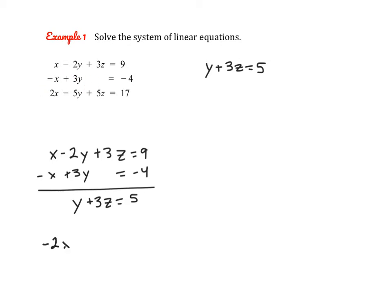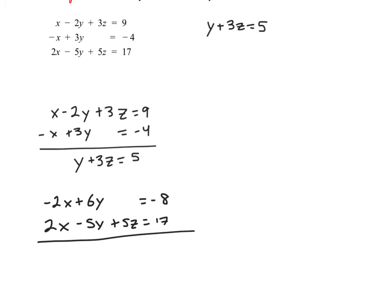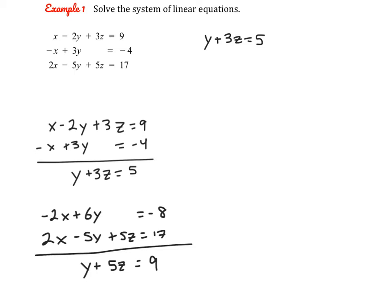So we have negative 2x plus 6y equals negative 8. And then our third equation stays the same. And then here we can add vertically. So we get y plus 5z equals 9. So I'm going to write this problem up top. And now you can see that we have our system of two variables.